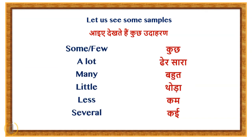Woh vishetian shabd — Many (bahut), Little (thoda), Less (kam), Several (kai).